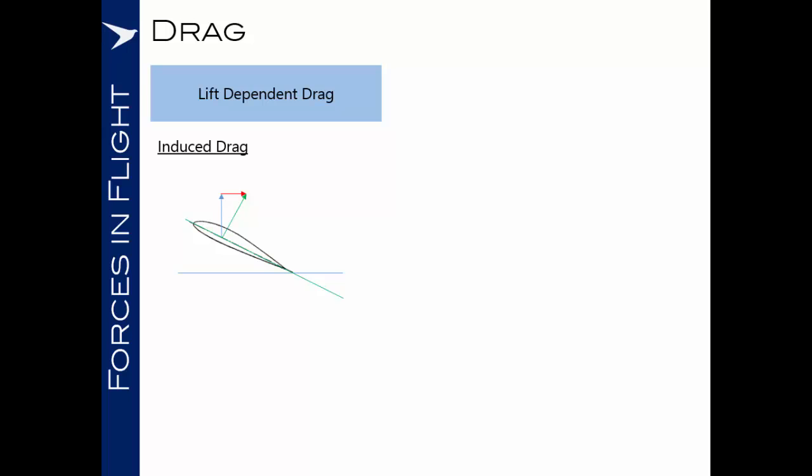The other big factor in this induced drag part of our lift dependent drag are the vortices generated from the wingtips. If we take our aircraft, we said that there was a slightly greater air pressure below the wings than above the wings. Now as we look at the wingtips on this aircraft, you can see that we have a pressure differential and the air wants to wrap itself around from the bottom surface over to the top surface in order to equalize the pressure. Now this rolling over of the air from the bottom surface of the wing to the top surface of the wing creates the wingtip vortices.